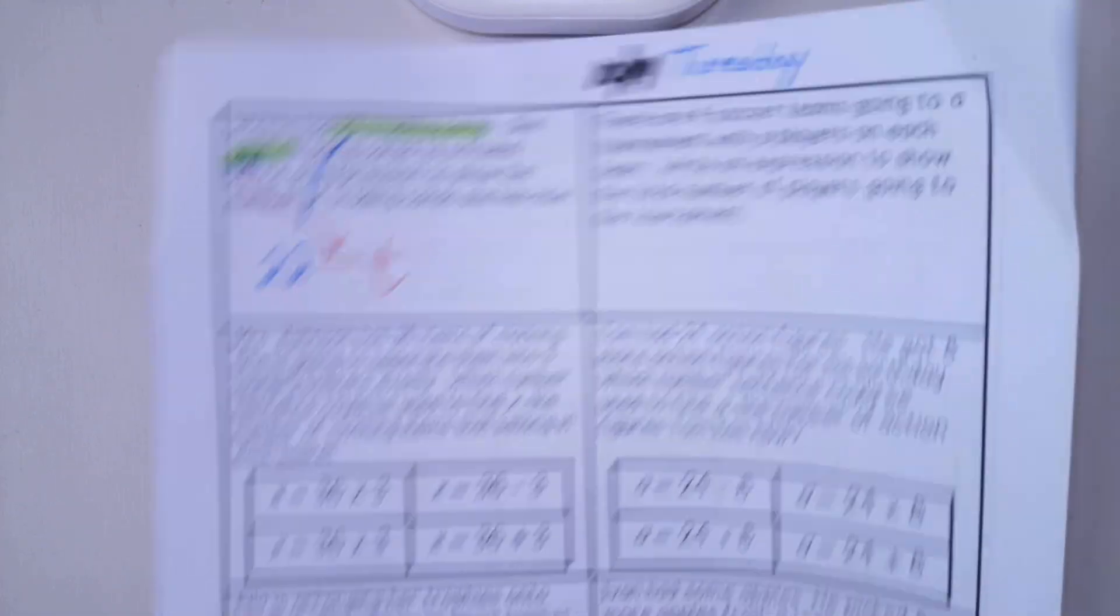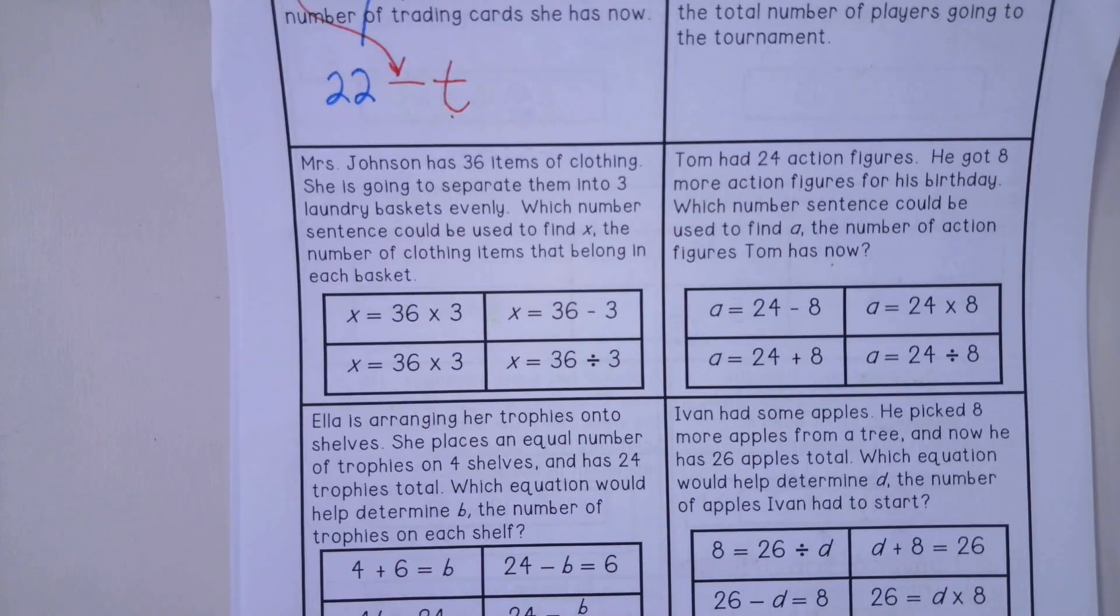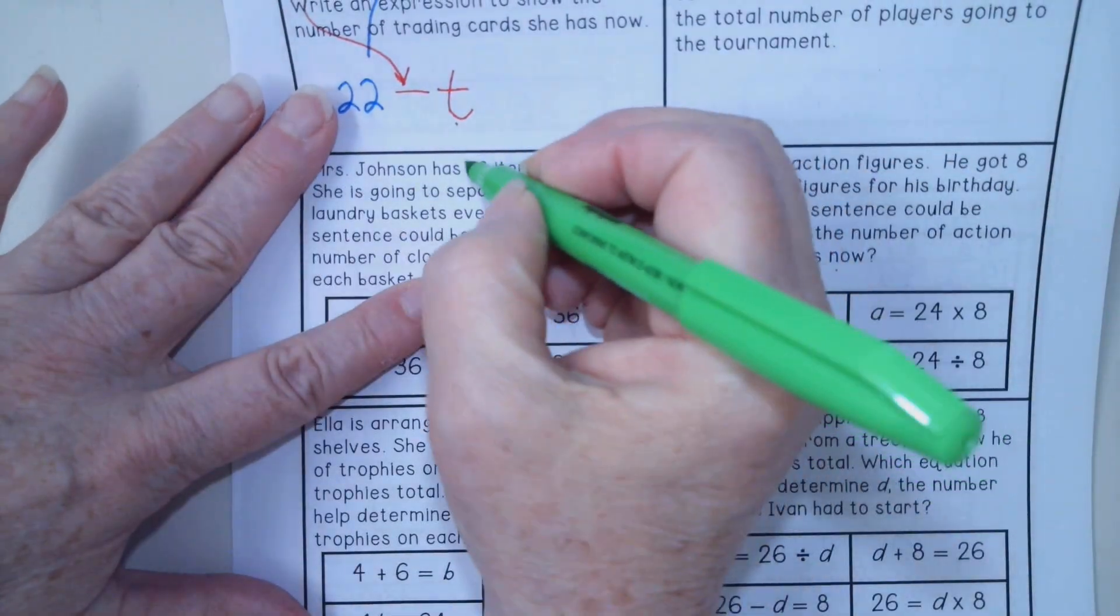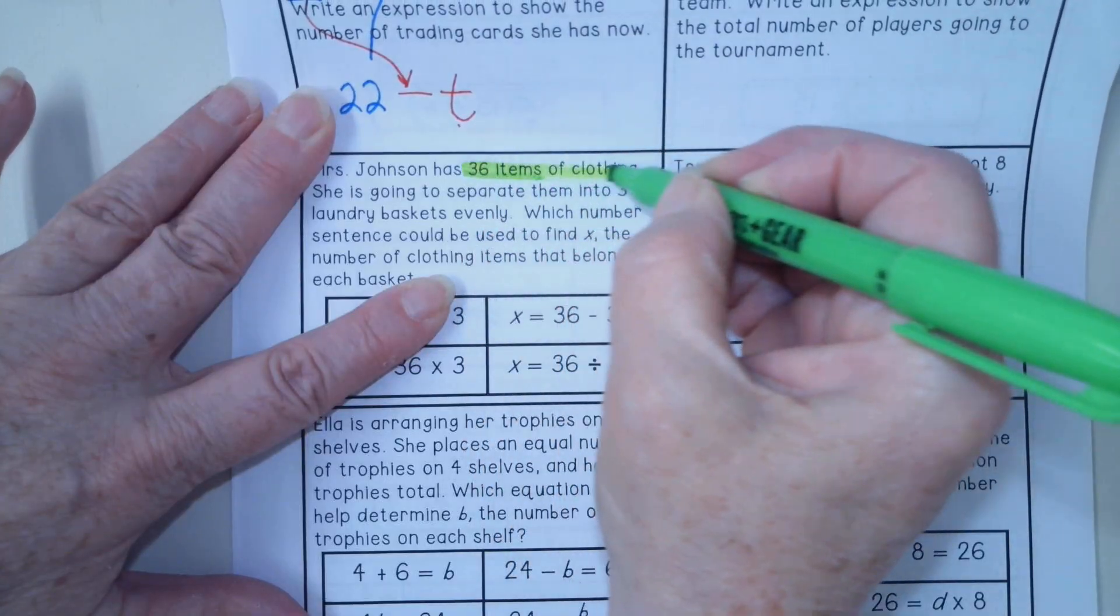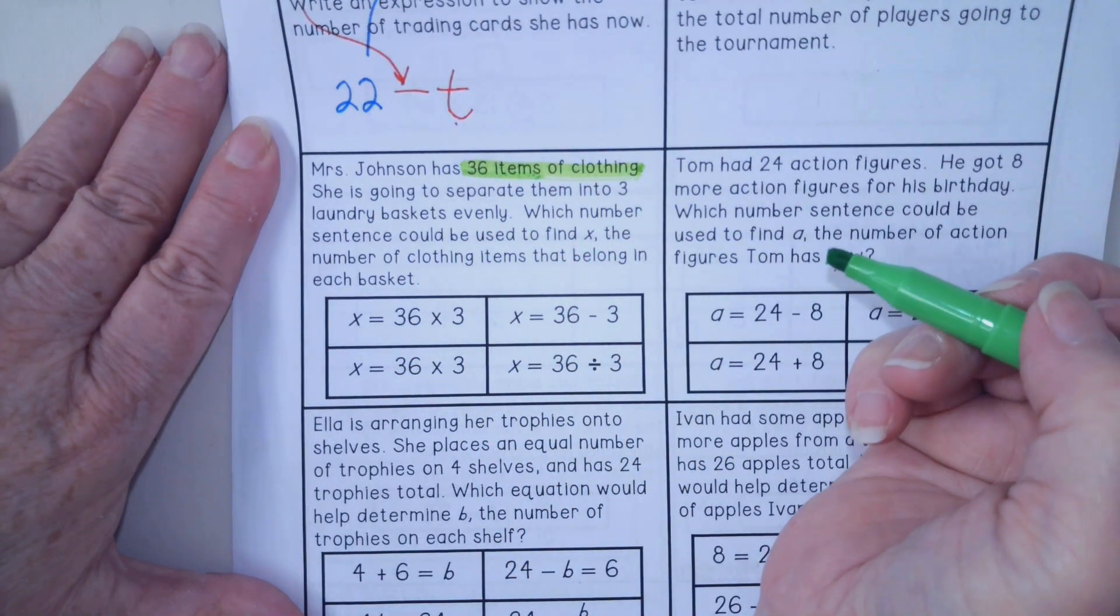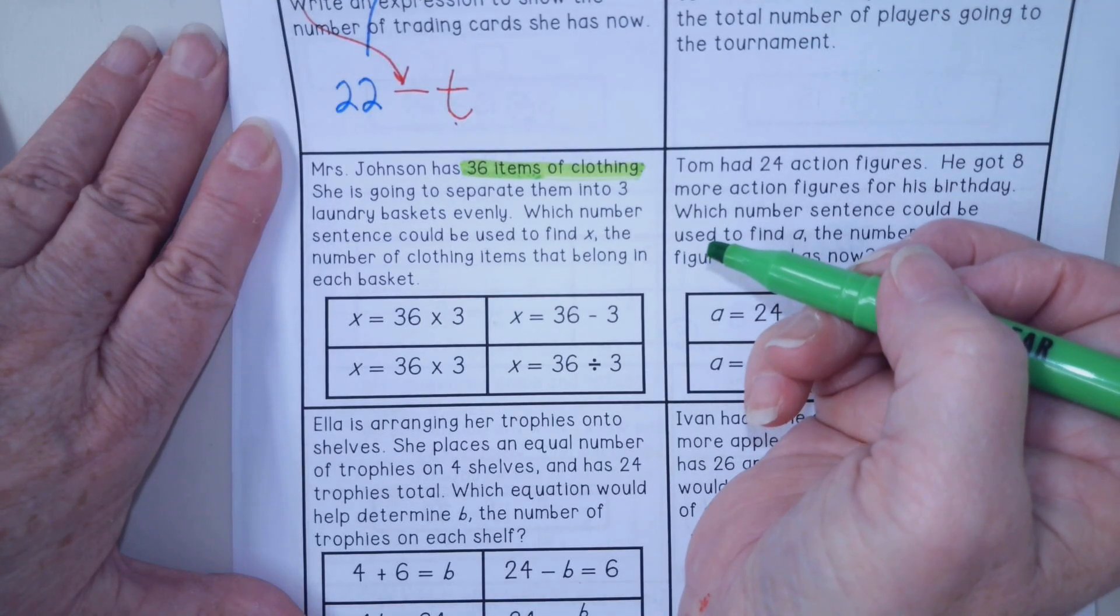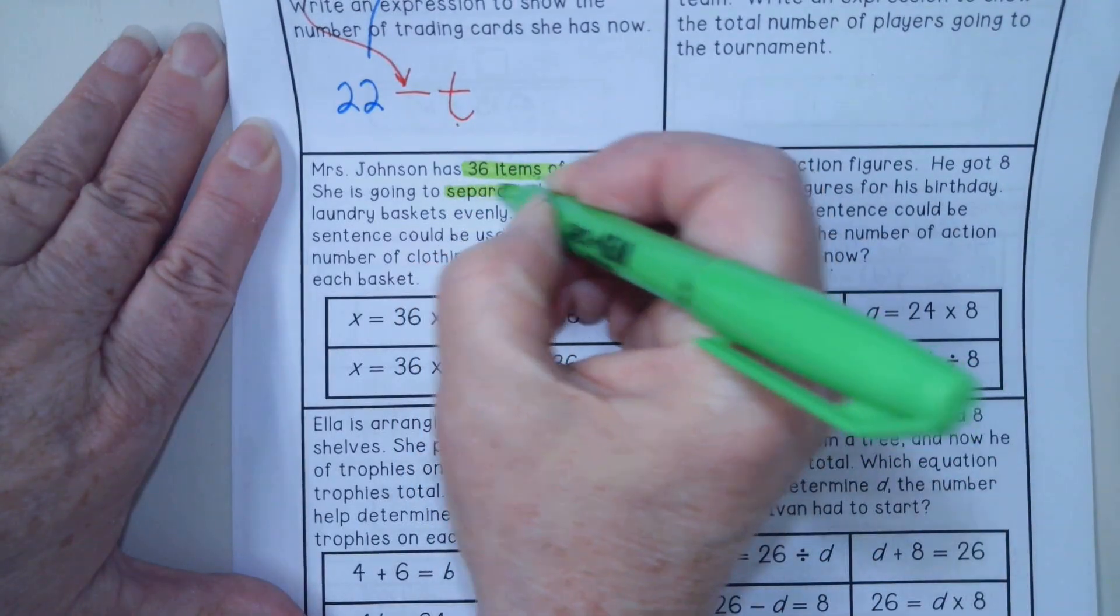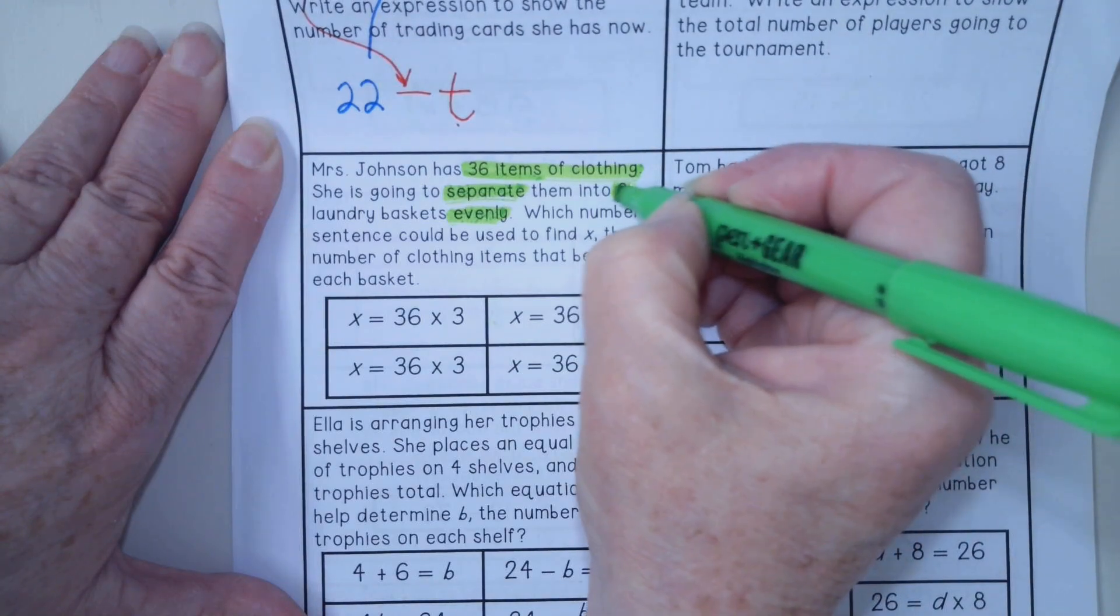Let's look at question number two. Mrs. Johnson has 36 items of clothing. She is going to separate them into three laundry baskets evenly. I'm going to highlight the words separately, evenly, and three.